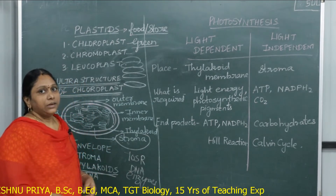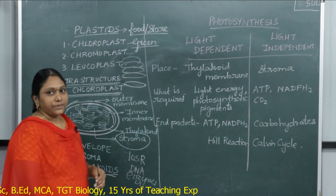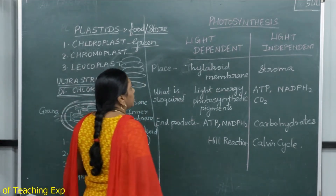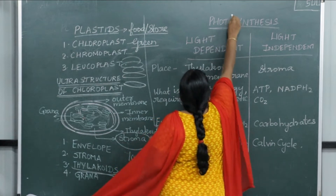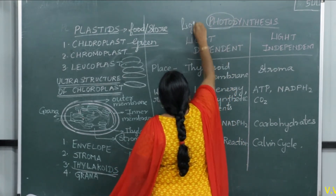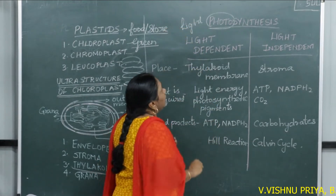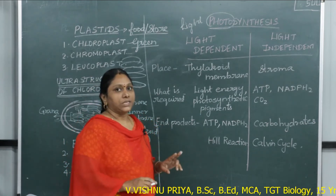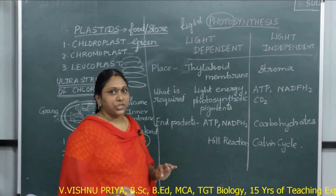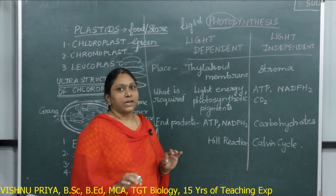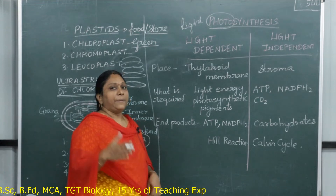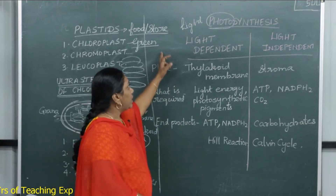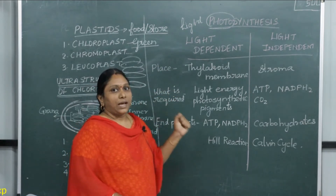Next, coming to photosynthesis. 'Photo' means light and 'synthesis' means to build — plants absorb light and synthesize their own food. Photosynthesis is a process by which autotrophic organisms — organisms which can prepare their own food — use chlorophyll to trap solar energy and convert it into chemical energy. Only organisms that have chlorophyll can prepare their own food.